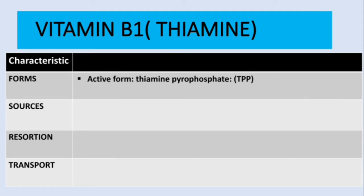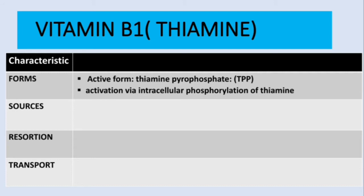TPP is thiamine plus two phosphates — so there is phosphorylation of thiamine. We can say the activation is via intracellular phosphorylation of thiamine. Now, what about the sources of vitamin B1?